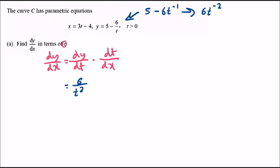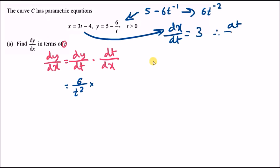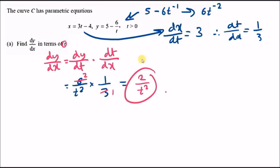For dx over dt, differentiating x equals 3t minus 4 gives us 3. So dt over dx is the reciprocal: 1 over 3. Therefore dy over dx equals 6 over t squared times 1 over 3. Simplifying: 6 and 3 cancel to give 2 over t squared. Part A is complete.